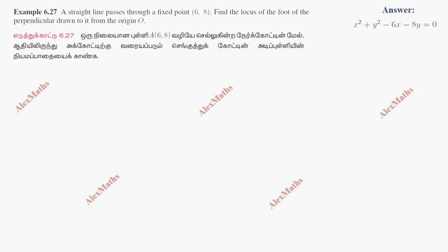Hi students, this is Alex here. Example 6.27. A straight line passes through the fixed point (6, 8). Find the locus of the foot of the perpendicular drawn to it from the origin.